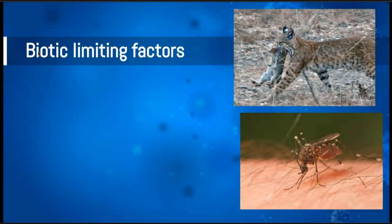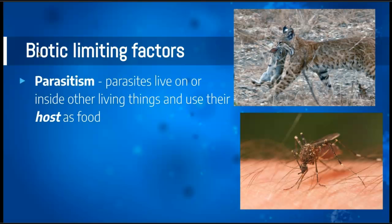There are also biotic limiting factors — living things that will affect how many organisms can live in a particular area. One type is what is called parasitism. A parasite is simply an organism that lives on or inside of another living thing and basically uses their host as food. Something like a mosquito, for example, would qualify as a parasite because they literally feed off of us. They're called parasites because when they do this, they don't kill the host — so when a mosquito eats us, it's not killing us in the process.